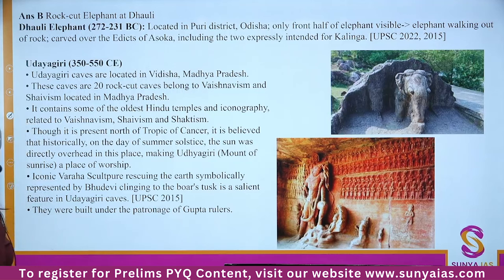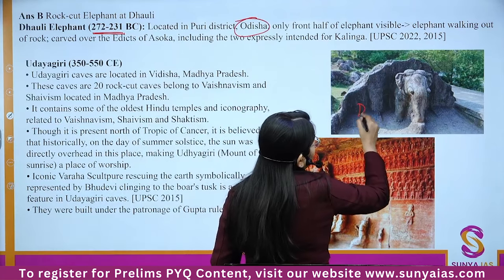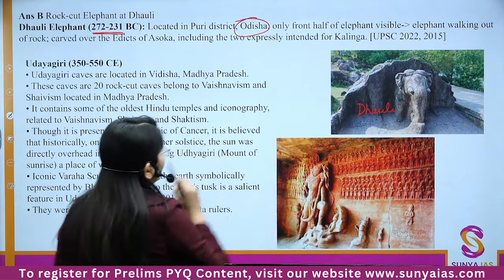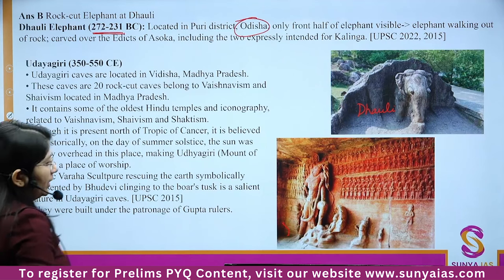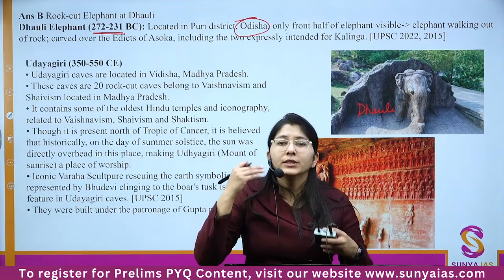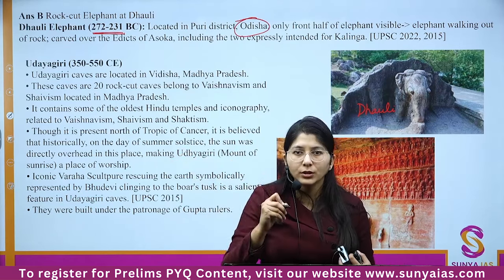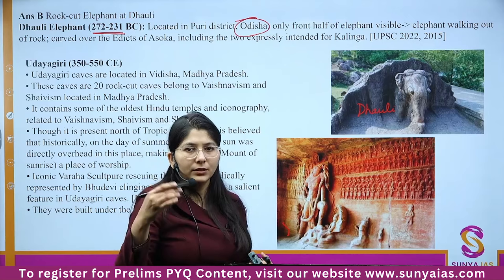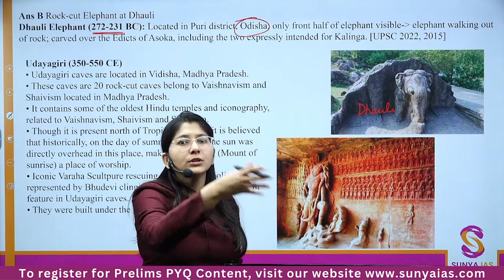Udaigiri (350–550 CE) is located in Vidisha, MP. It is related to Vaishnavism, Shaivism, and Shaktism. It is located above the Tropic of Cancer; on the day of summer solstice, the sun is directly overhead — that's why it's called Udaigiri: 'Udai' means sunrise, 'giri' means mountain. Here you find the iconic Varah sculpture — Varah is the boar incarnation of Lord Vishnu who rescued Bhu Devi (Mother Earth) from deep waters.